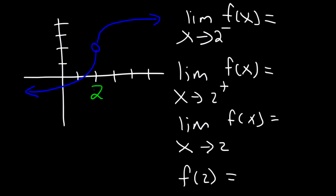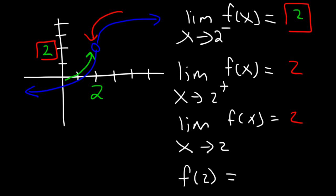Here's x equals 2. Approaching from the left side, the y value is 2. Approaching from the right side, the y value is still 2. Therefore the limit as x approaches 2 from either side is also 2, since both sides match. Now, what is f of 2? There is no closed circle in this example, so f of 2 does not exist — if you don't see a closed circle at x equals 2, f of 2 is undefined.